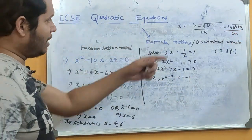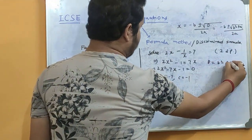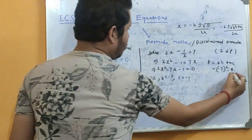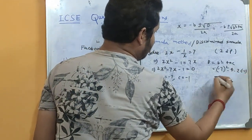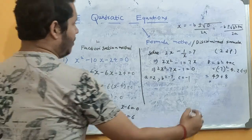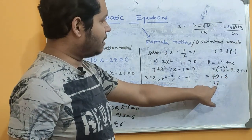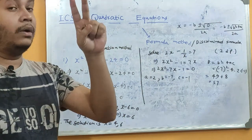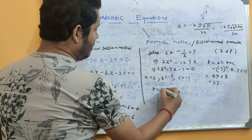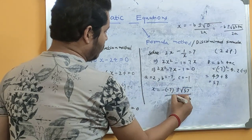Now let's apply the formula. First, find D: D = b² − 4ac = (−7)² − 4(2)(−1) = 49 + 8 = 57. Since D = 57 > 0, this equation will have two real and distinct roots. Now applying the formula: x = (−(−7) ± √57) / (2×2) = (7 ± √57) / 4.